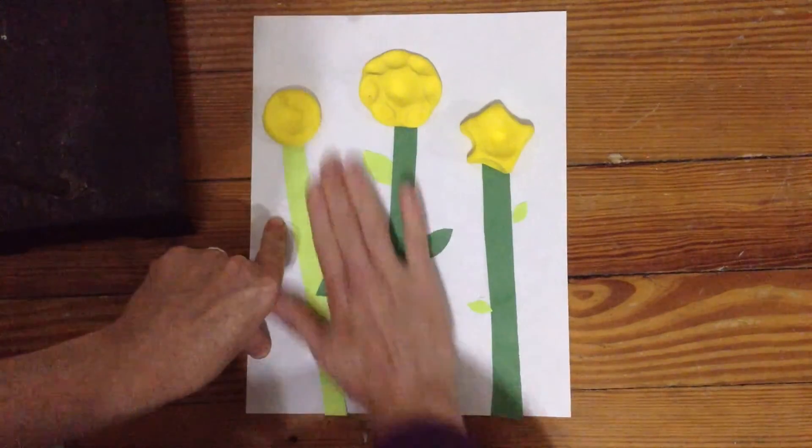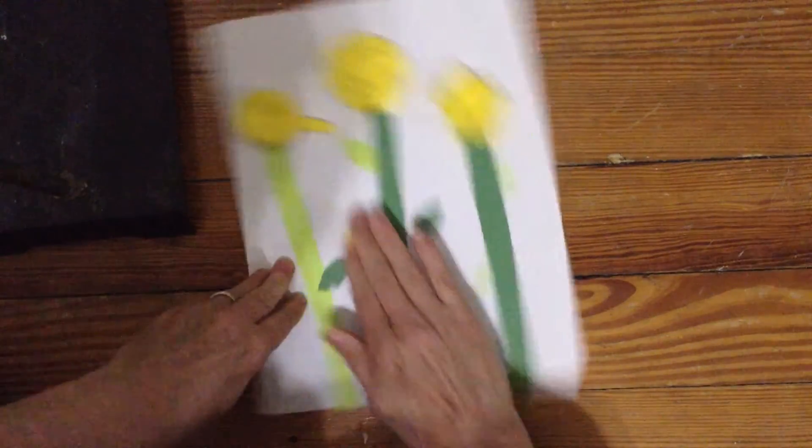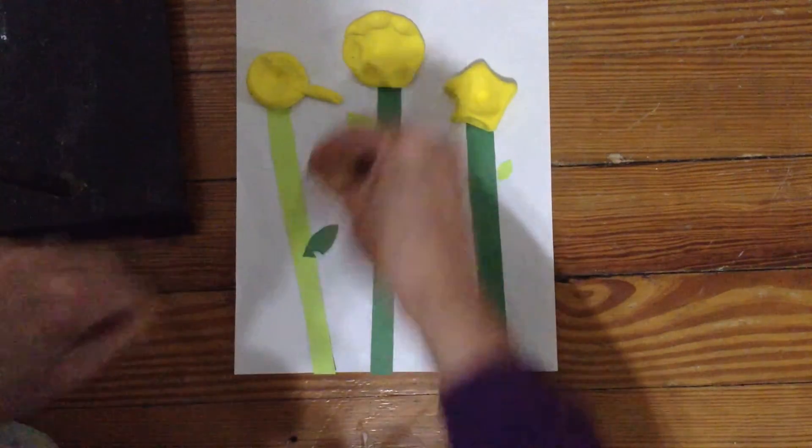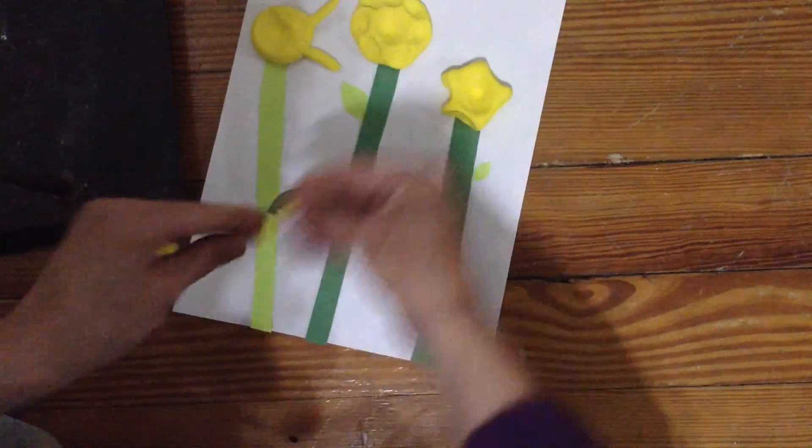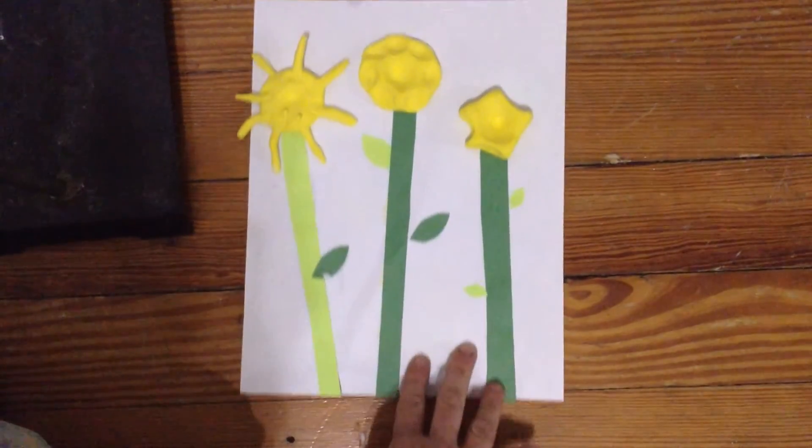So I'm gonna just roll these little coils and make them go around the center part. And there I have three different flowers.